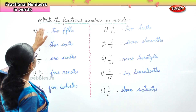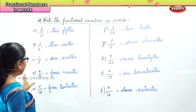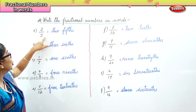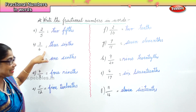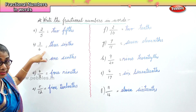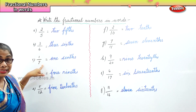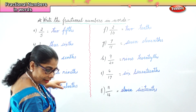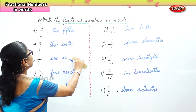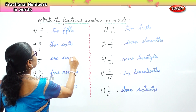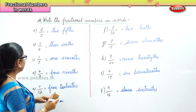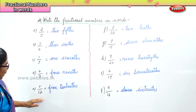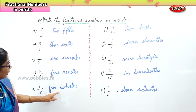Now what did we learn today? We learned to write fractional numbers in words. 2 by 5 — two fifths. 3 by 6 — three sixths. 1 by 7 — one seventh. 4 by 9 — four ninths. 5 by 12 — five twelfths.